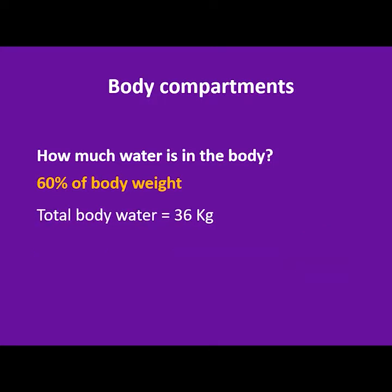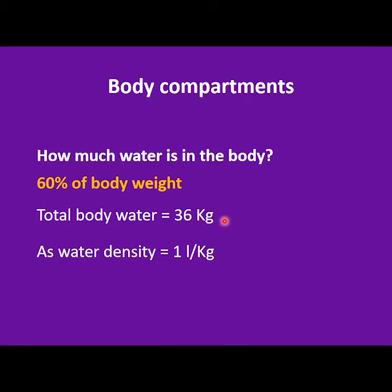How do we relate kilograms with liters? Remember that water density is 1 liter per kilogram. So if we have 36 kilograms of water, the total body water volume will be 36 liters.